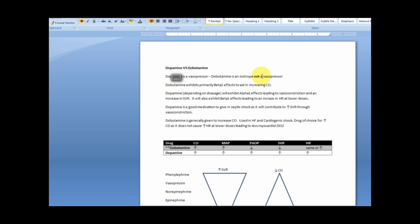Dobutamine, with a B, exhibits primarily beta-1 effects to aid in increasing cardiac output. And dopamine, depending on the dosage, will exhibit an alpha-1 effect, leading to vasoconstriction, and therefore an increased systemic vascular resistance. It will also exhibit a beta-1 effect at lower doses. Dopamine is a great medication for septic shock because it will contribute to increased systemic vascular resistance.